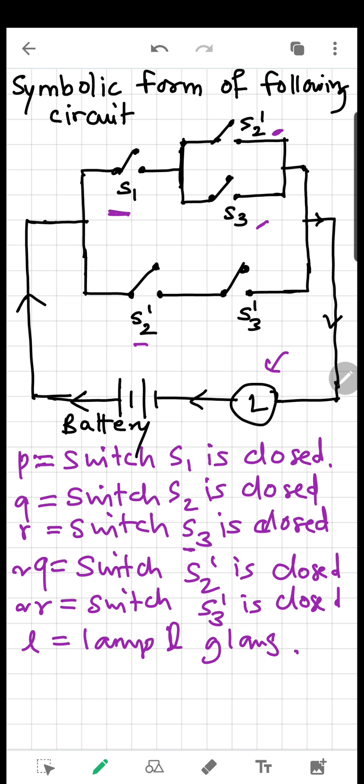Now we want to find out a statement which defines the output L. So L is equivalent to - as I can see there are one and two, there are two different things in parallel. So when parallel we call it OR. So what is the first bracket? This is S1.